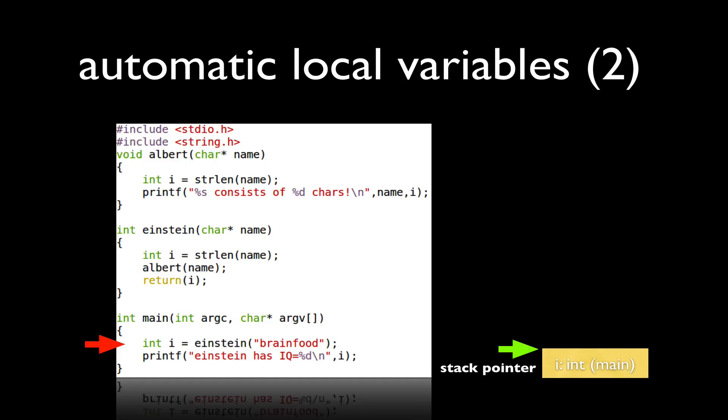When main invokes Einstein, our stack pointer is increased and we actually add room for the i variable that's defined within the context of Einstein.